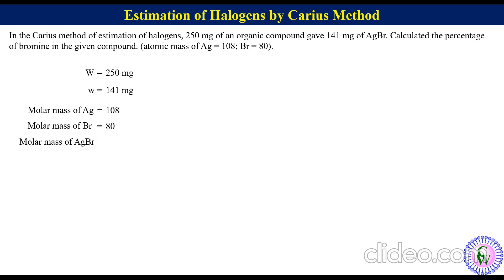We know that percentage of bromine is equal to molar mass of bromine times small w times 100 upon molar mass of AgBr times capital W. That will be equal to 80 times 141 times 100 upon 188 times 250, is equal to 24%.